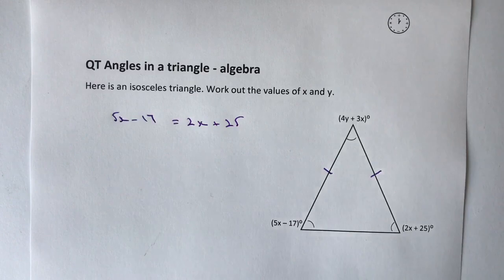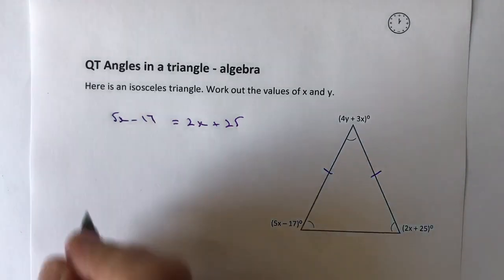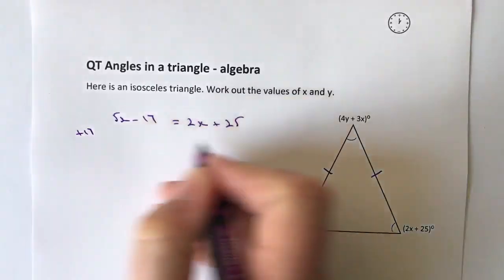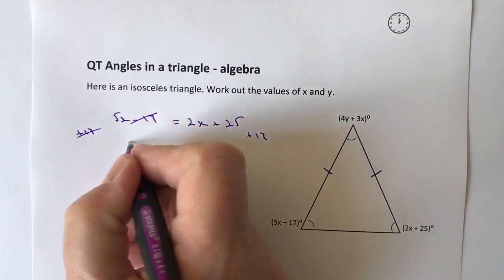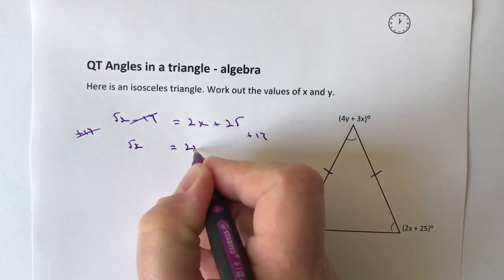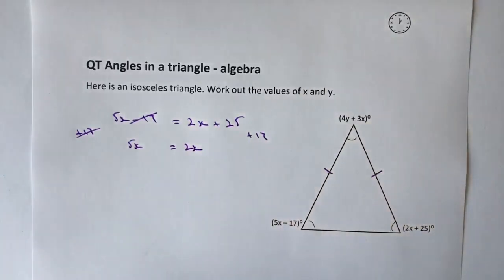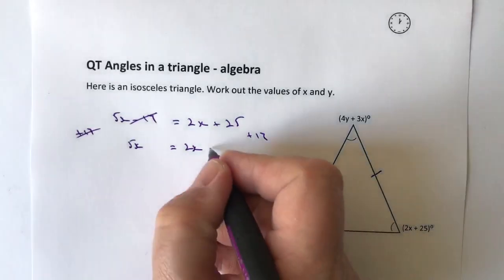The first thing I'm going to do is get rid of that minus 17 by adding 17 to both sides. If I add 17 to both sides, those two disappear and I get 5x equals 2x, and then 25 plus 17 is going to be 42.